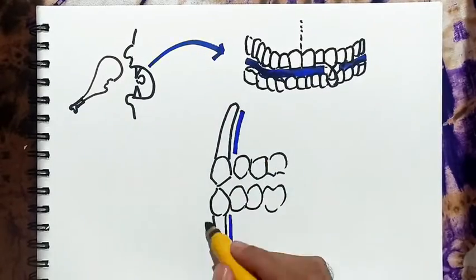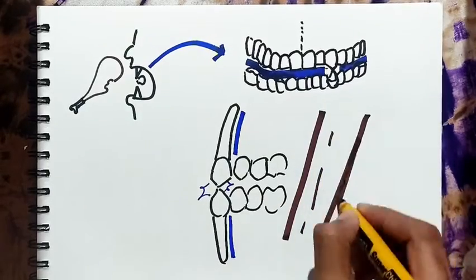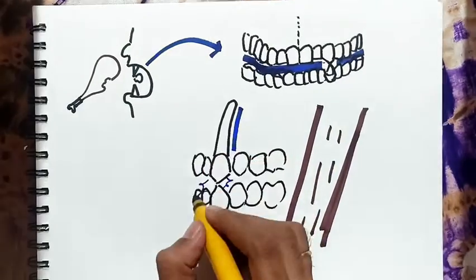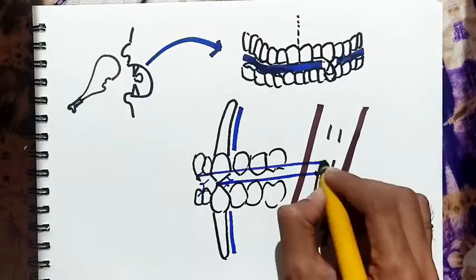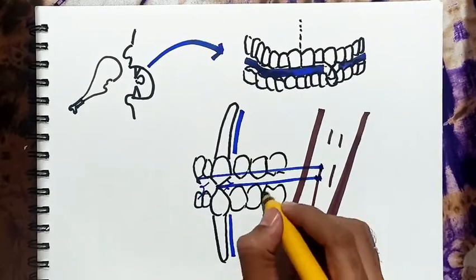As canines have longer roots they can withstand higher forces and they are nearer to the muscle compared to incisors so they can produce more forces.